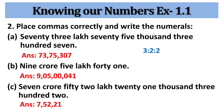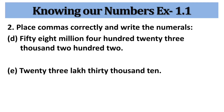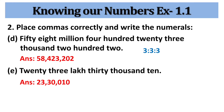The answer of part c is 7 crore 52,12,302. For the international system, starting from the right, the first comma is placed after 3 digits, then the next commas are also placed after every 3 digits, and we get the answer 58,423,202. The last problem in the Indian system gives 23,30,010.